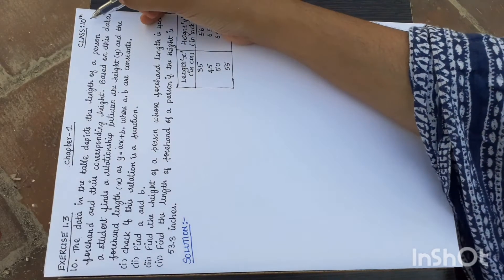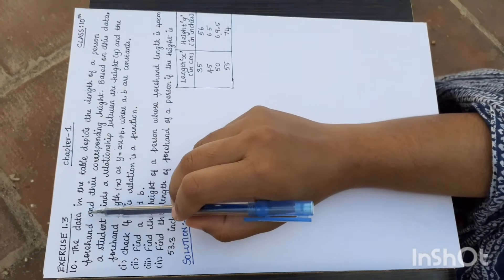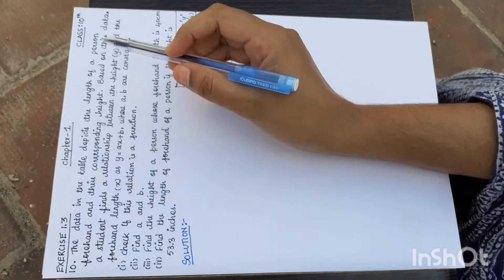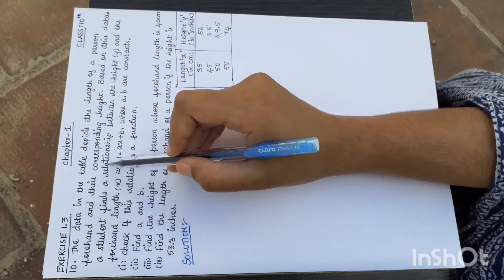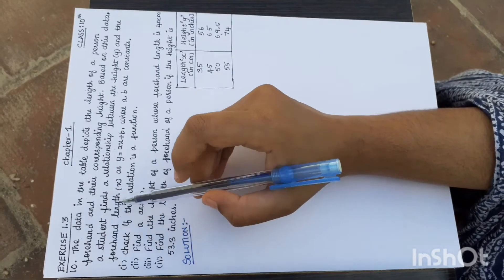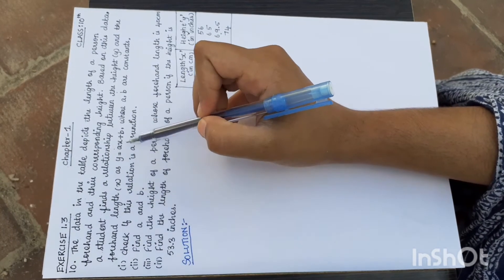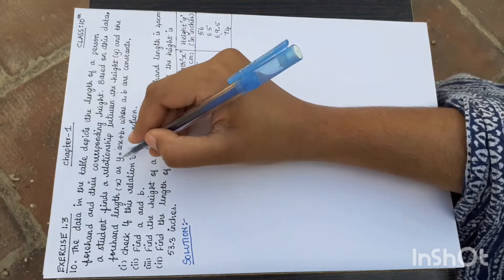Welcome to Rifaas Max. 10th Standard Chapter 1, Exercise 1.3, 10th Sum. The data in the table depicts the length of a person's forehand and their corresponding height. Based on this data, a student finds a relationship between height y and the forehand length x. What kind of relation is there?